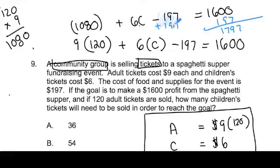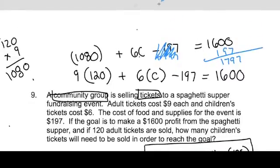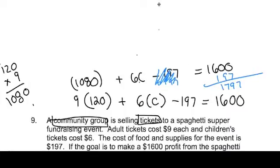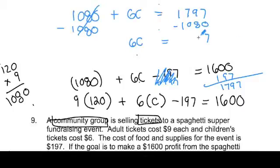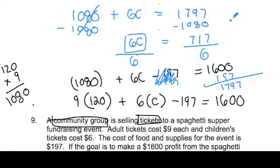Okay, that cancels off. Now all this is is algebra. So I have this plus the 6c equals $1,797. I subtract this amount here. I get 6c — these cancel out — is equal to... and I do the subtraction. It's really easy to make a mistake in any one of these subtraction steps, so you've got to take your time. Then divide by 6. Divide by 6 — I hope I did this right.